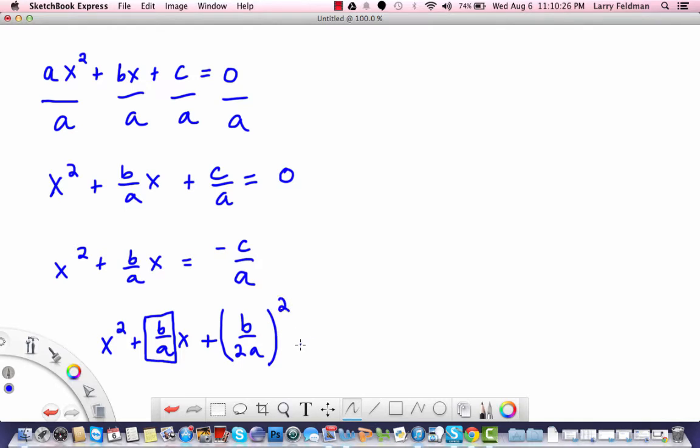Now that doesn't seem obvious, but the reason why we did that is to make the left side factorable. Since we added that term to the left side, we have to also add it to the right side so that the equation stays balanced.